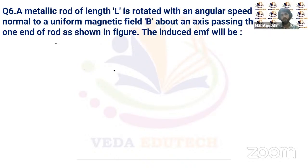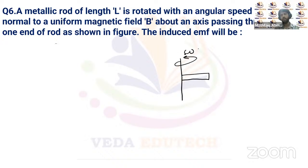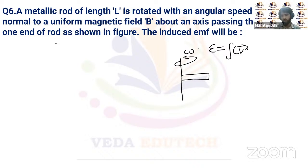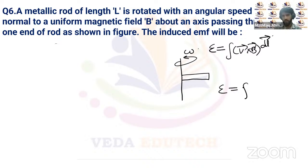Question seven: a metallic rod rotates in a magnetic field with angular velocity ω about an axis through one end. The induced EMF is found using E = ∫(V × B)·dL. Since velocity is perpendicular to B, V × B is along dL, so EMF = ∫VB dL.